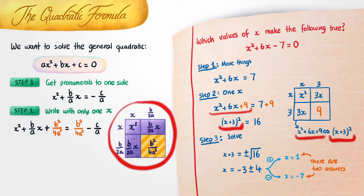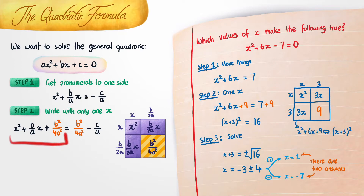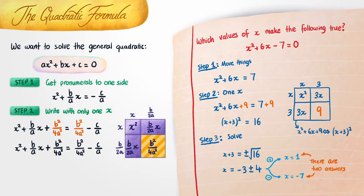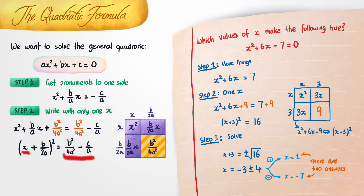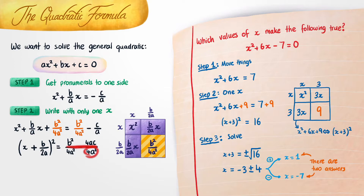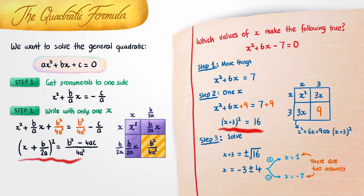In this particular case, the whole left hand side is the same as the area of our square, so we can replace it with x plus b on 2a all squared. Now I'm going to also simplify the right hand side. We want to get the lowest common denominator, which is 4a squared. So we multiply the top and bottom of the other term by 4a, giving 4ac on the top and 4a squared on the bottom. Then we combine this into a single fraction with 4a squared on the bottom. I'll call step 2 done. If you imagine a is 1, b is 6, and c is minus 7, and plug into this formula, you'll see it gives the same number — 16.